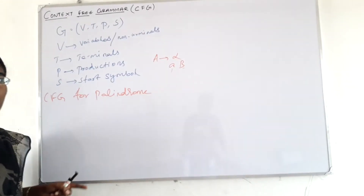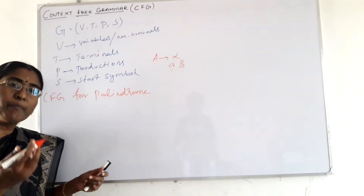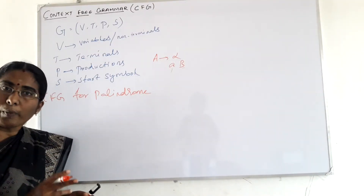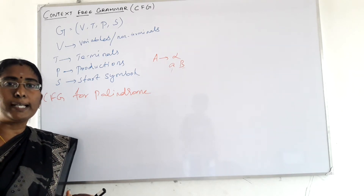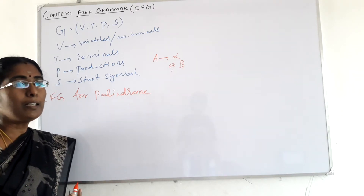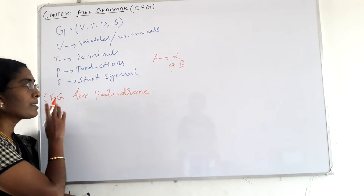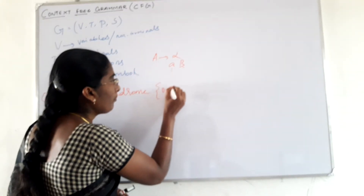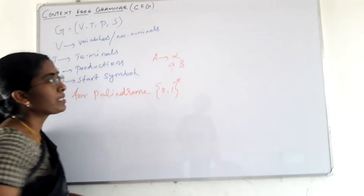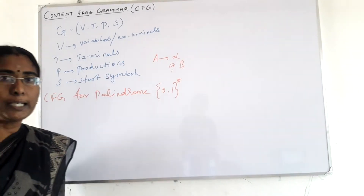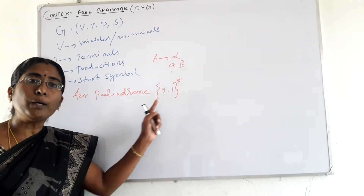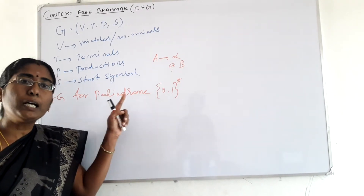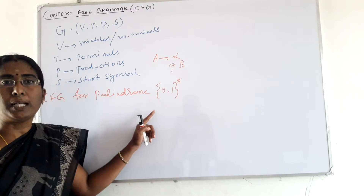The start symbol is any variable from which we begin the production. The variable where we start the production is called the start symbol. Now we will see an example: construct a CFG for palindrome.